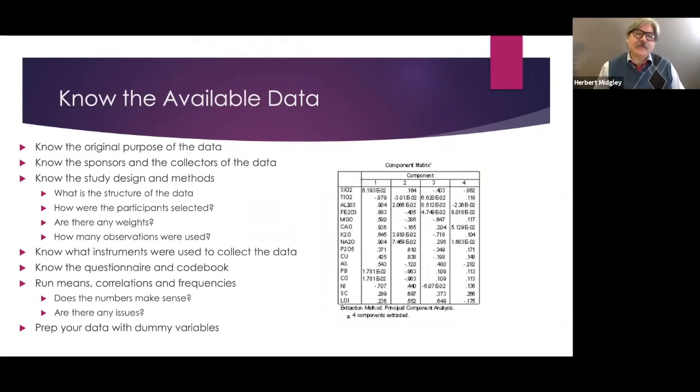Let's talk about getting to know your available data. What was the original purpose of this data? Who sponsored this data? And who collected it as well? Know the design studies and the methods. What's the structure of the data? Who were the participants? How were they selected? Were observations used? A lot of things in there you need to ask questions about. Know what instruments were used to collect the data. Was it a questionnaire or survey or interviews? Emails. It's good to know that. If it was like a questionnaire, get that questionnaire and look at it. Get the code book and look at it to be able to figure out stuff.